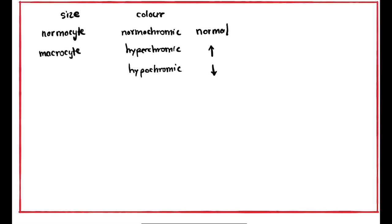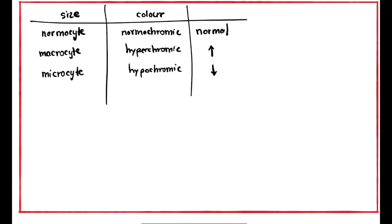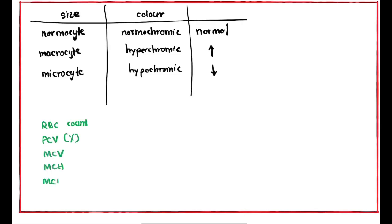Anemia is described using adjective forms. We use microcytic to describe reduced cell size, and hypochromic to describe reduced color. When our findings fill up, we write the anemia type. This is based on the blood picture parameters.